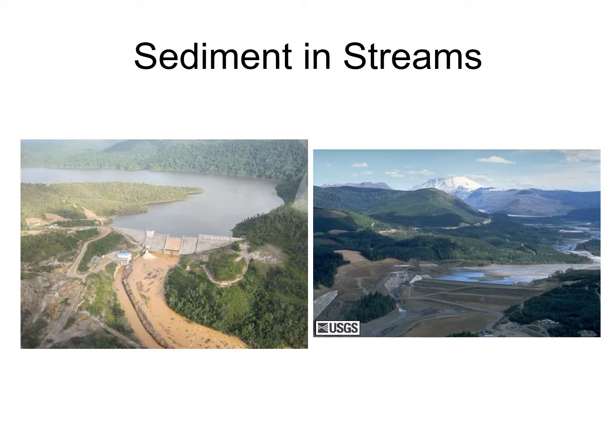Rivers carry sediment and nutrients with them, and the building of dams can inhibit that. That means the sediment and nutrients aren't going to the ecosystems further downriver, and so that can affect the health of them.